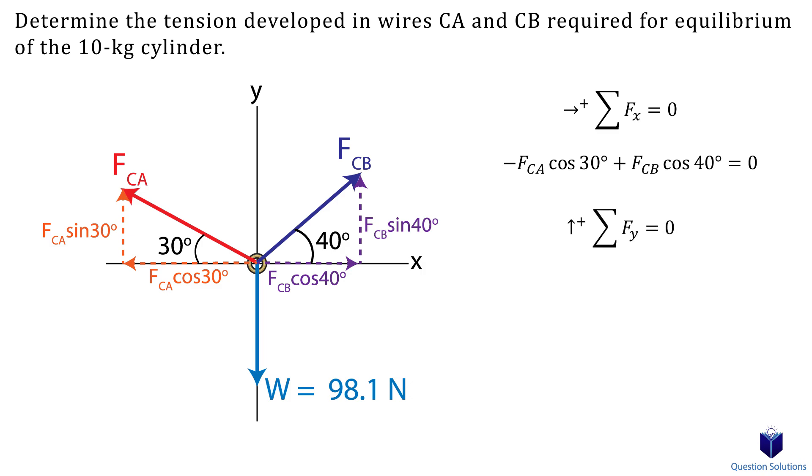Next, we look at y-axis forces. We will assume up to be positive. There are three forces to consider. We have the y-components of force CA and CB, and we have the weight, which is straight down. Since the weight is downwards, it will be negative. We now have two equations with two unknowns. You can solve them any way you like. So these are the tensions in the cables to hold the 10kg cylinder in equilibrium.